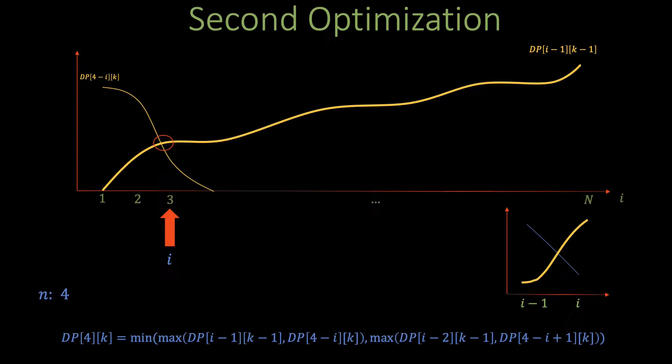This time dp[4-i][k] is already below the yellow curve so we know that the intersection point is at i or one index before and we calculate dp[4][k]. We continue this process until we have calculated dp[n][k] for all n from 1 to capital N.